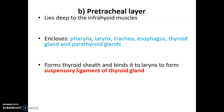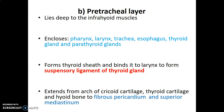The pretracheal layer forms what is called the thyroid sheath, enclosing the thyroid, and it forms a specialized suspensory ligament of the thyroid that binds the thyroid onto the larynx. The pretracheal layer extends from the arch of the cricoid cartilage to the thyroid cartilage and hyoid bone. It then enters the thorax into the superior mediastinum and extends downward into the inferior mediastinum — specifically the middle part — and becomes continuous with the fibrous pericardium of the heart. This is important because infection from the neck can spread into the pericardium via this continuous pathway.